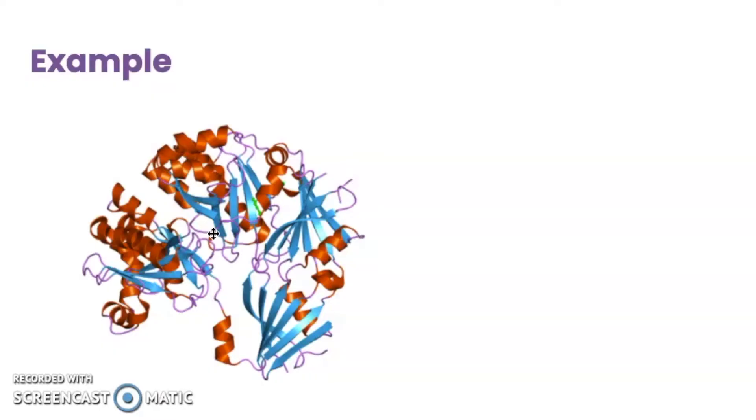If the enzyme unfolds or denatures, it also loses that active site shape and can no longer link up with the substrate for its reaction. So in all of biology, we want to think about how the structure of a particular molecule is going to help it get the job done that it needs to do.